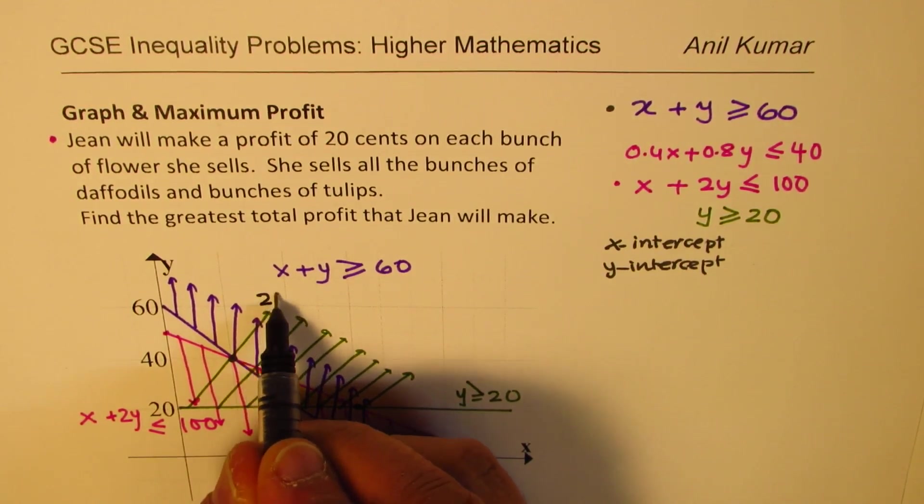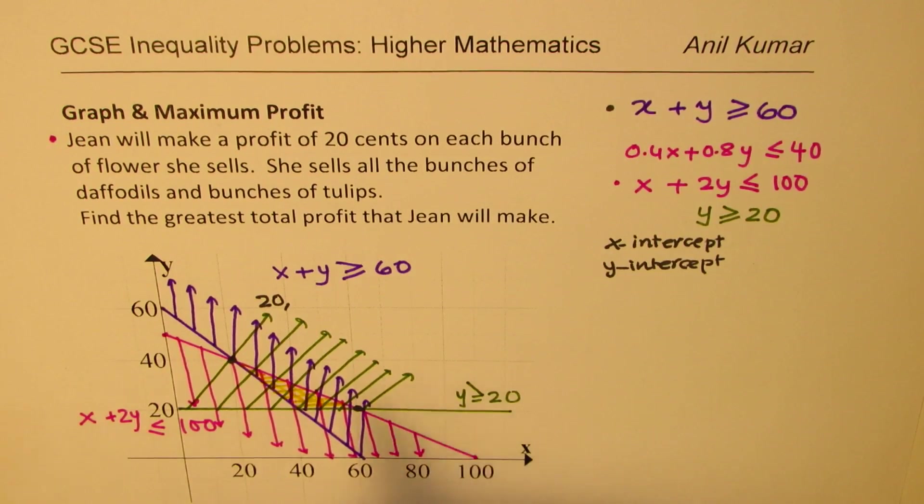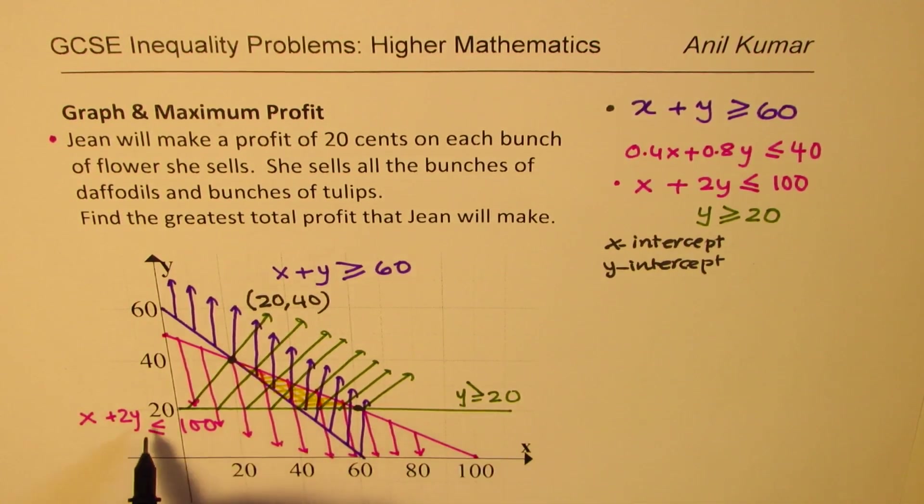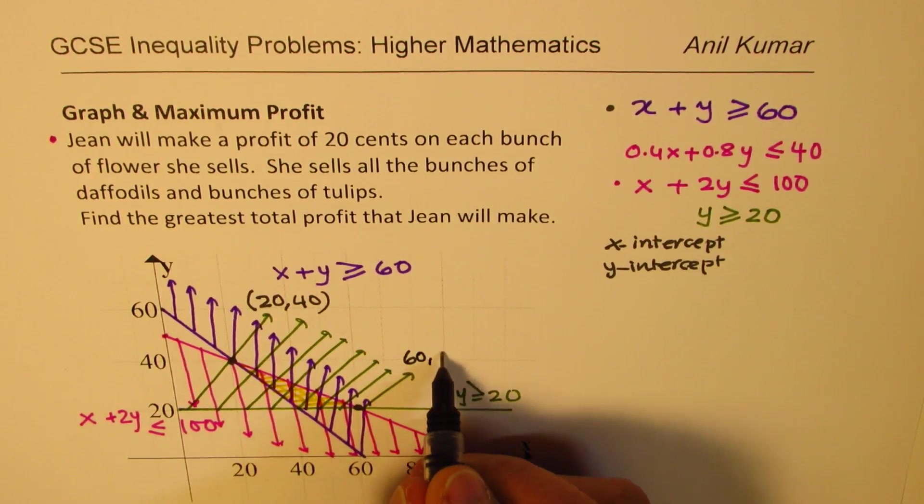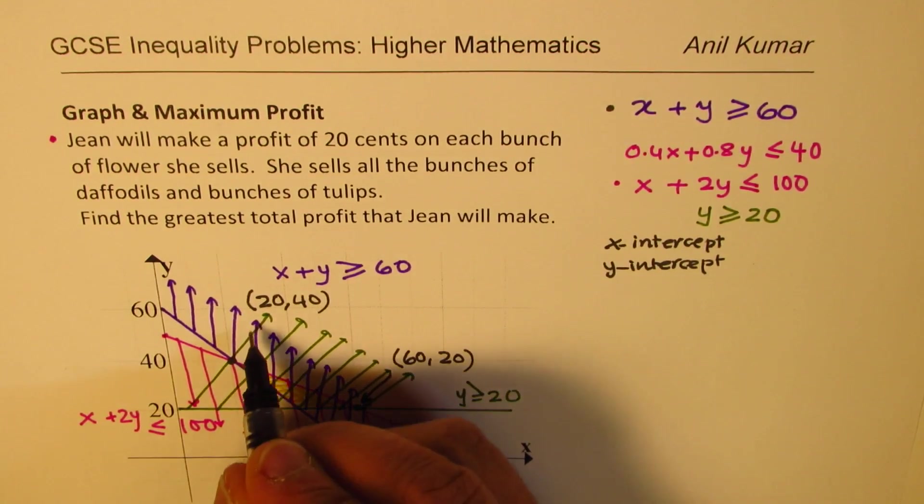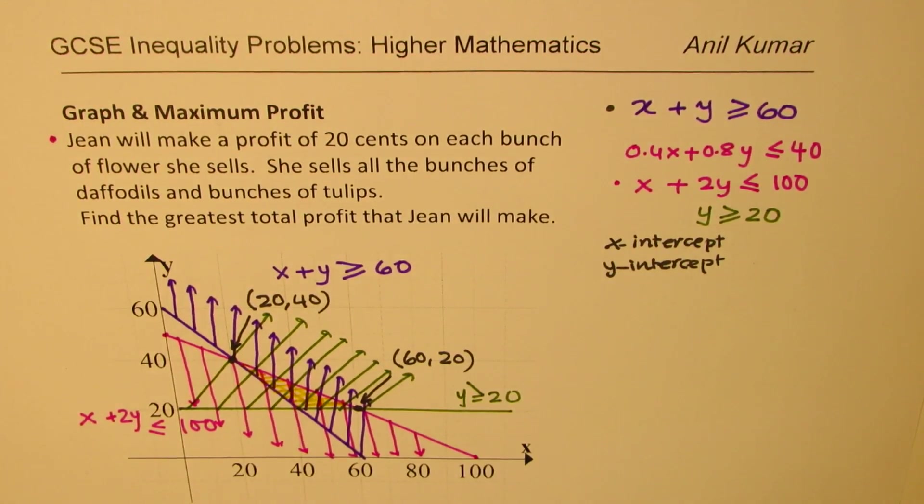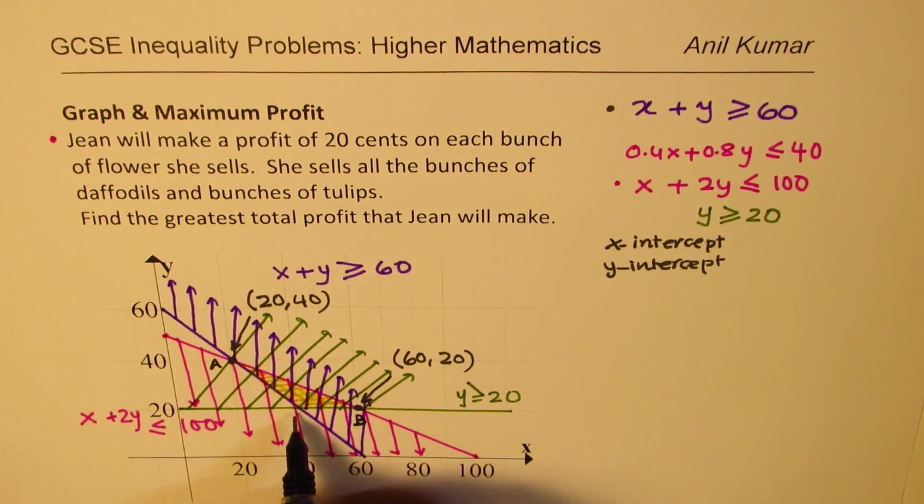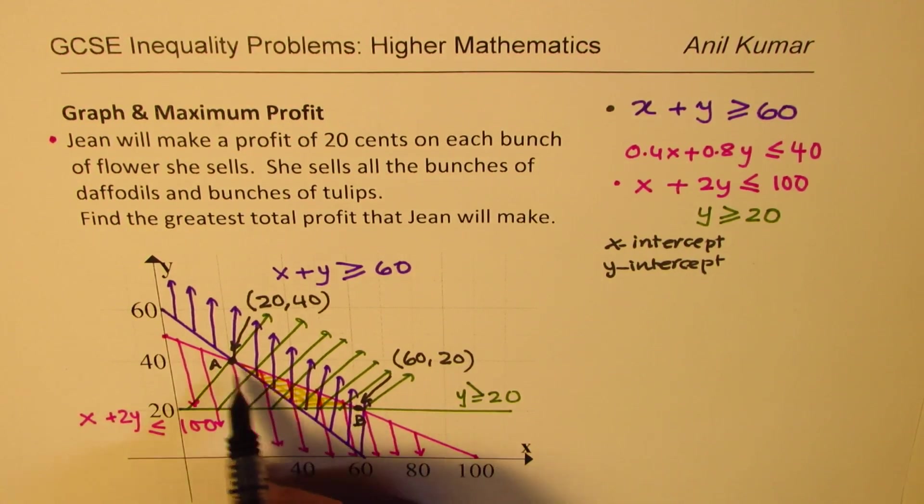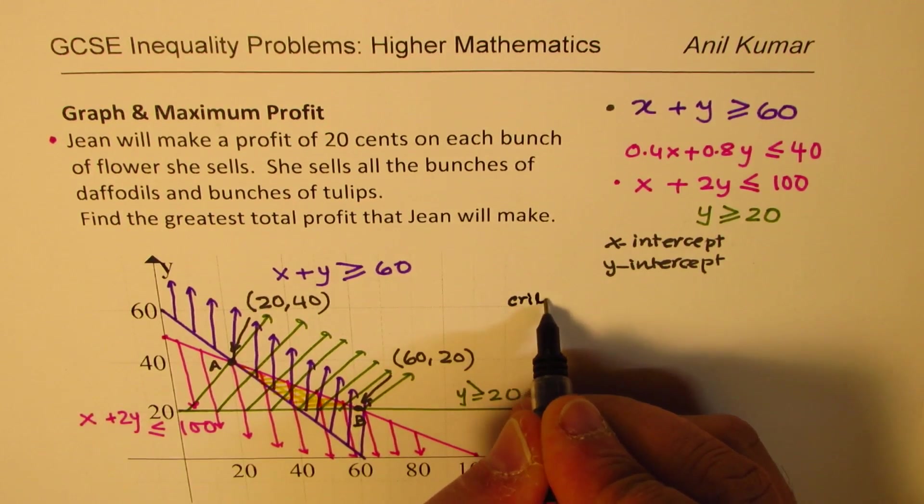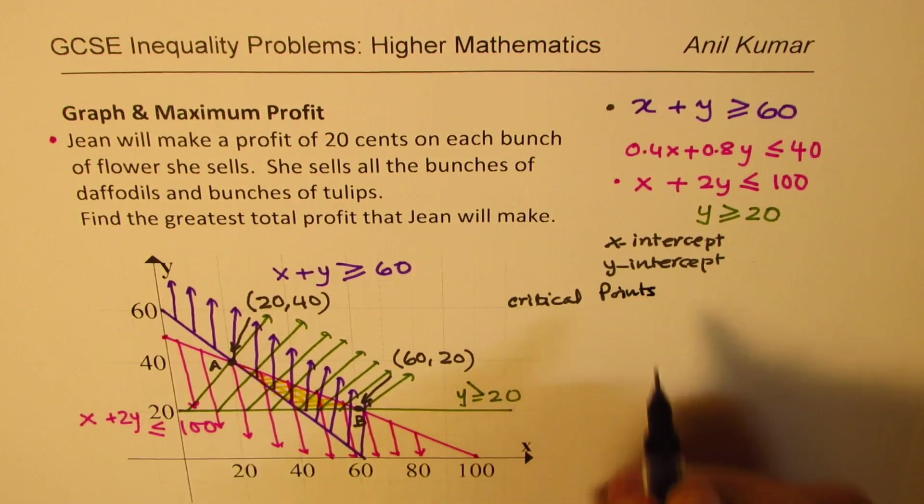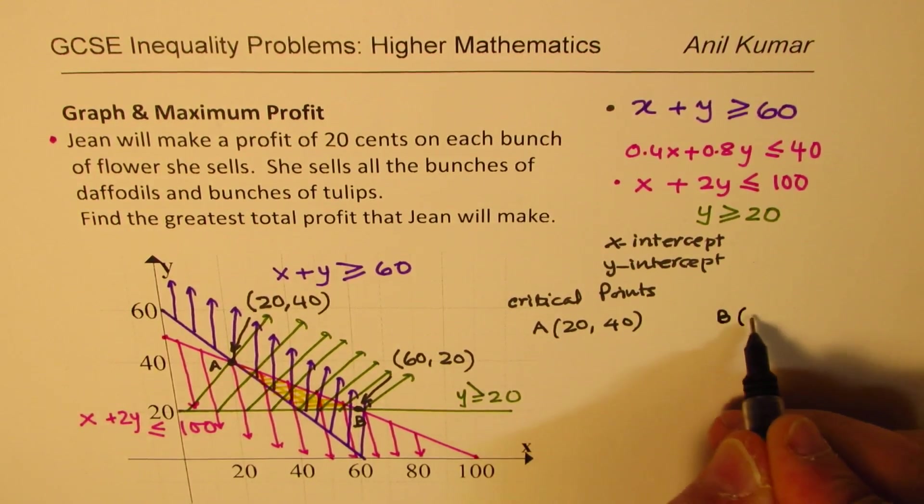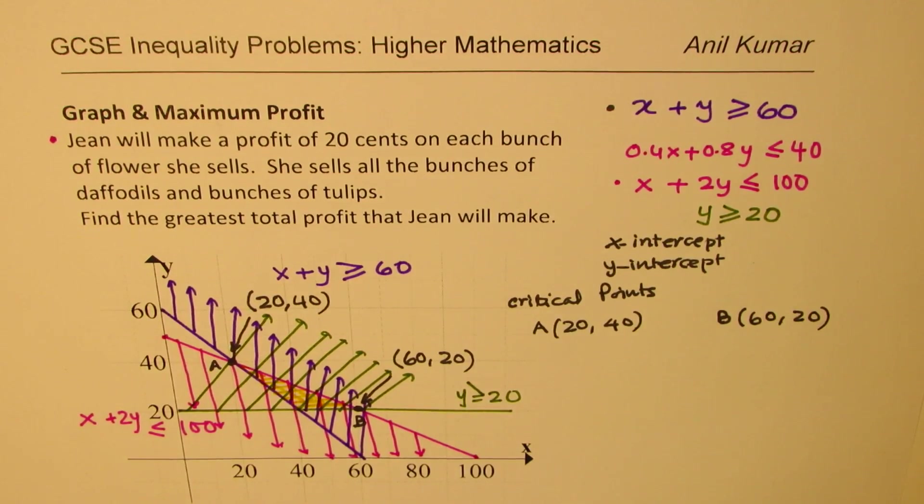So this point here is at 20, 40. So 20 for x-axis daffodils and 40 for tulips. This point here is at 60, 20. So this point here is at 60, 20 and that one is 20, 40. So for each point, we can find the profit. So let's call this point as A and this point as B. Of course, this will be much lower than A and B. So we'll just work on A and B. So the critical points are A which is 20, 40, and B which is 60, 20.